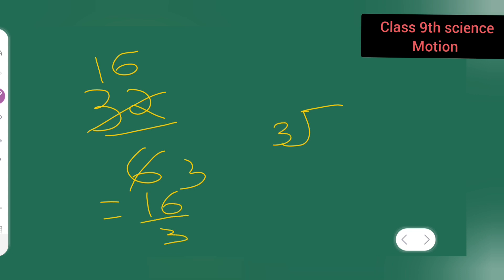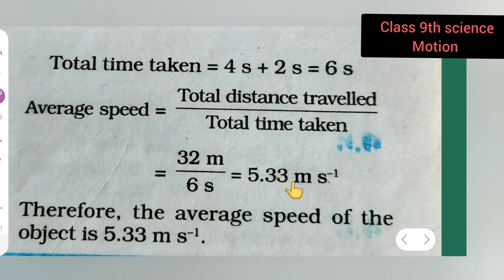Three into sixteen: three fives are fifteen, one will remain. Then your decimal point will be there. Three threes are nine, and so on. So basically, you get 5.33 as the answer.